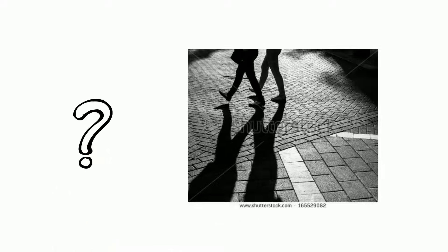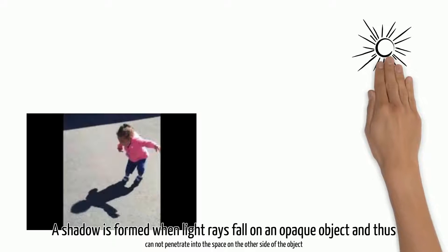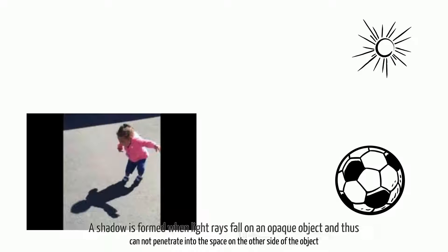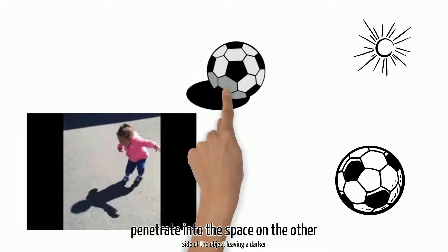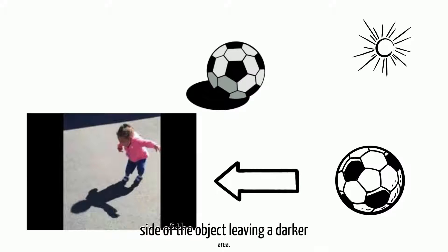How is a shadow formed? A shadow is formed when light rays fall on an opaque object and thus cannot penetrate into the space on the other side of the object, leaving a darker area. This comparatively dark area is called the shadow of that object.